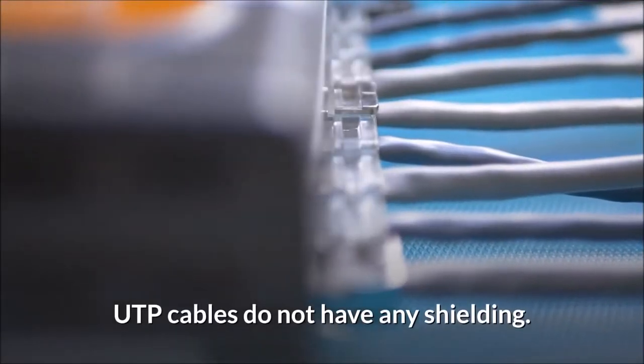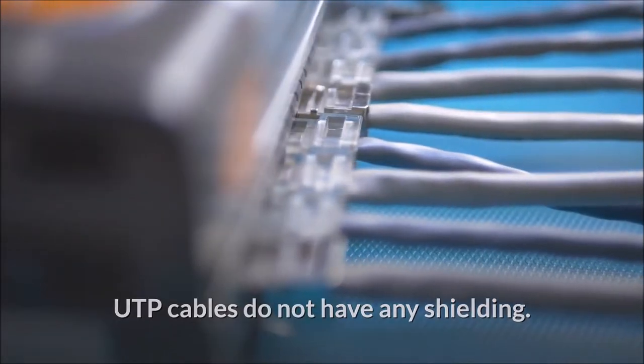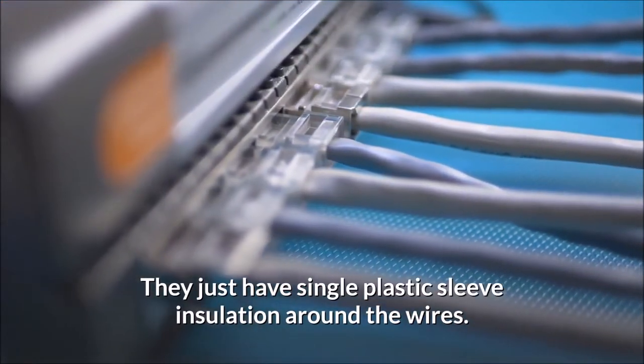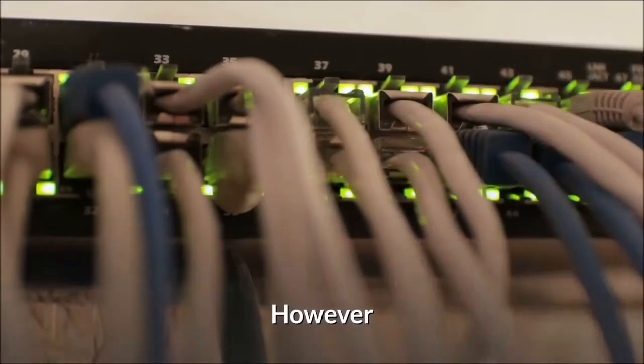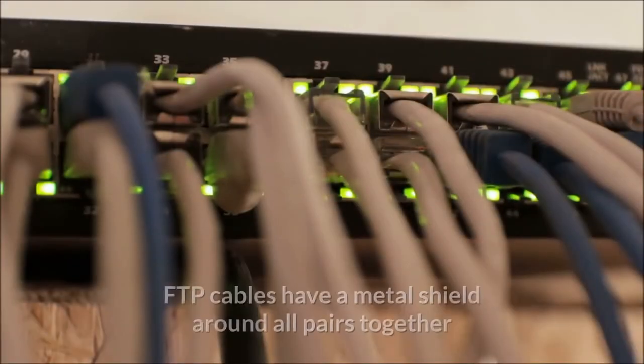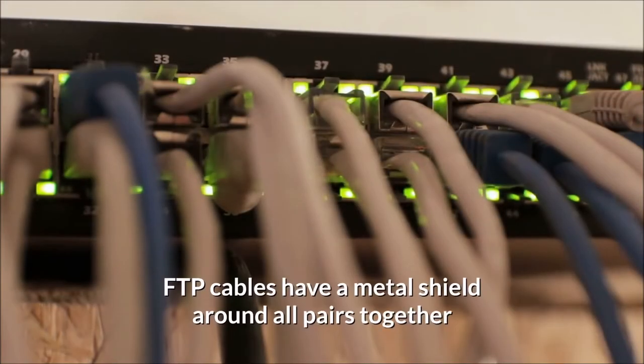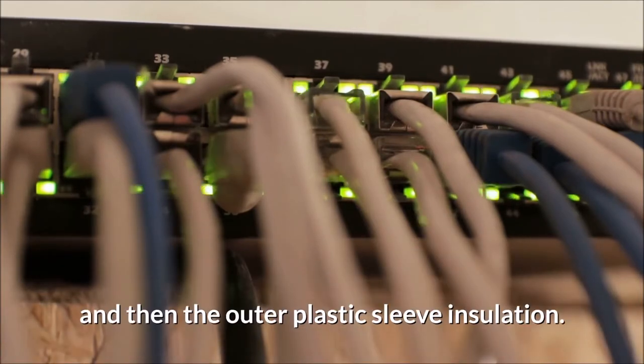UTP cables do not have any shielding. They just have single plastic sleeve insulation around the wires. However, on the other hand, FTP cables have a metal shield around all pairs together, and then the outer plastic sleeve insulation.